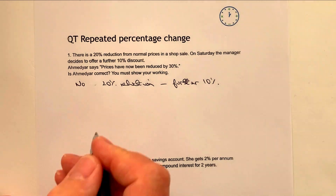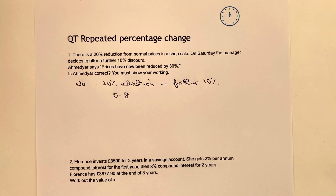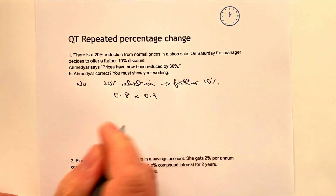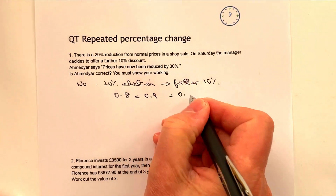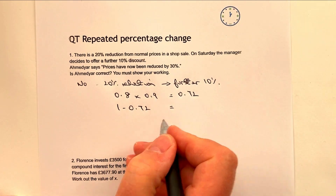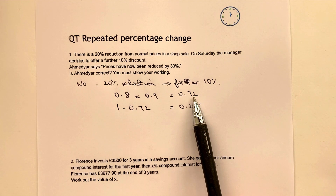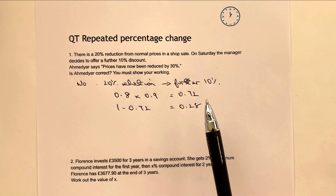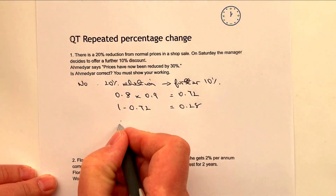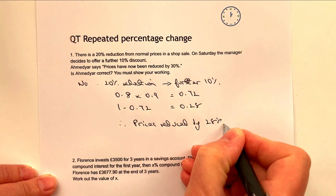The prices at this point are 0.8 — they are 80% of the prices they were right at the very beginning. So a 20% reduction is 80% of the actual price; as a decimal that's 0.8. And then a further 10% means we're going to multiply those prices by 0.9, which gives you 0.72. So effectively the prices have been reduced by 0.28, because the prices as they are now are 72% of what they were originally, making the actual reduction 28%.